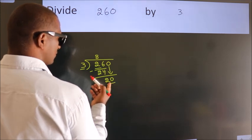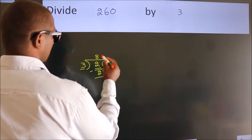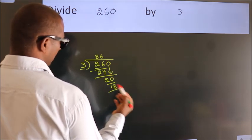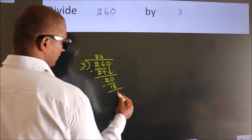A number close to 20 in the 3 table is 3 times 6, which is 18. Now we subtract. We get 2.